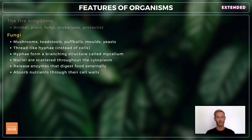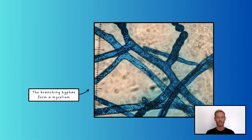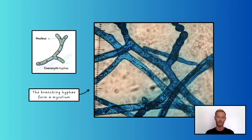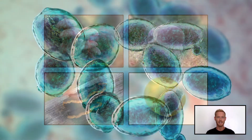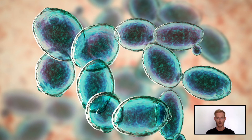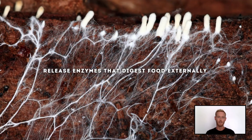Fungi are distinct from other organisms as they're composed of thread-like hyphae instead of cells. These branching hyphae form a structure known as a mycelium and contain scattered nuclei throughout the cytoplasm. Fungi come in many forms including mushrooms, puffballs, bracket fungi, molds that grow on food and decaying plant matter, and yeasts which are single-celled. Fungi break down organic matter externally and absorb nutrients through their cell walls.